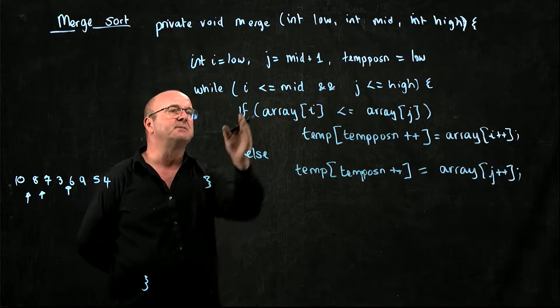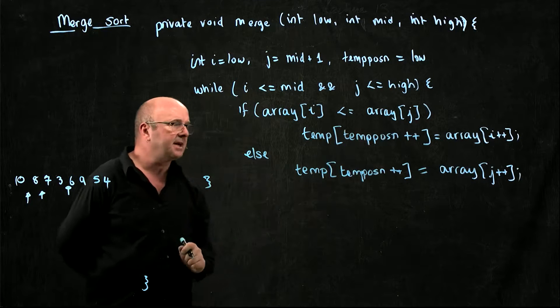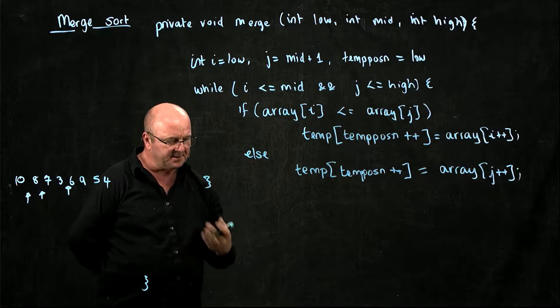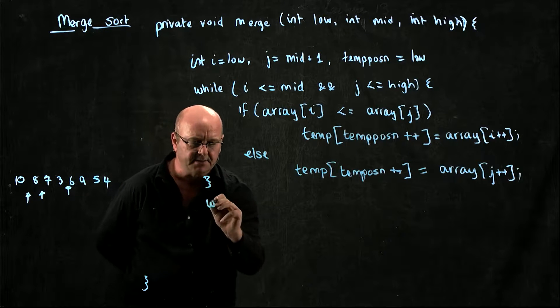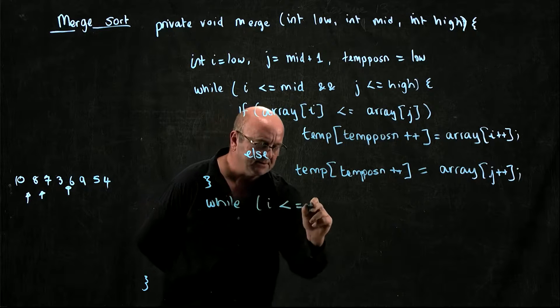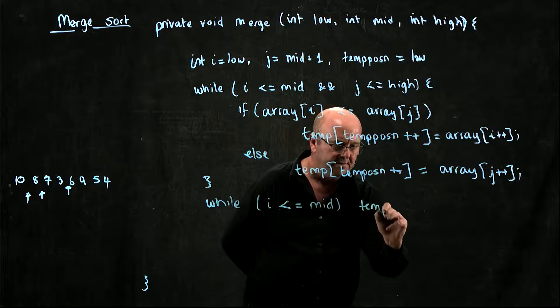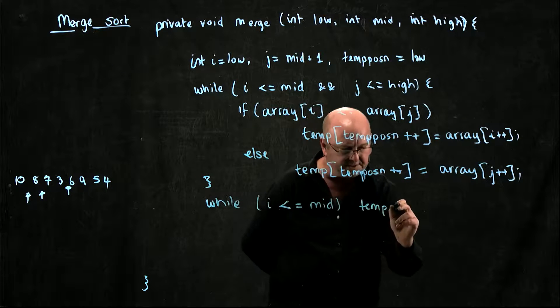And now all we've got to do is just make sure that i goes out to mid and j goes out to high, so that we've included everything else. So while i is less than or equal to mid, and I'm just going to write this on one line, although normally, of course, you would write this on two lines.